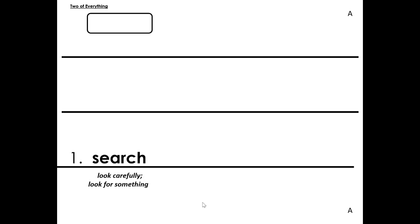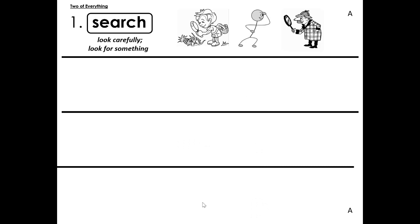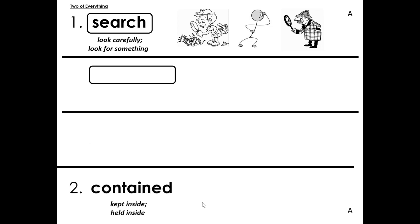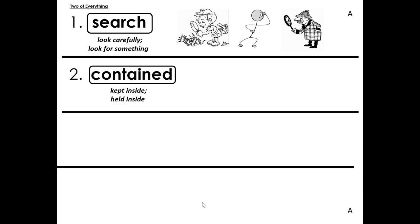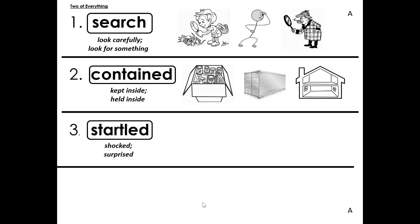Let's review our vocabulary words, because when we retell the story, we're going to use some of the targeted vocabulary words. Number one: search — look carefully, look for something. Number two: contained — kept inside, held inside.